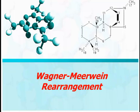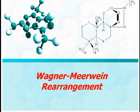Welcome students. Today I discuss the Wagner-Meerwein rearrangement. In a chemical reaction, when a carbocation is formed, it has a tendency to rearrange to form a more stable carbocation via the migration of hydrogen, an alkyl group, or a bond. When a carbocation undergoes rearrangement via migration of an alkyl group or bond, the rearrangement is called the Wagner-Meerwein rearrangement.